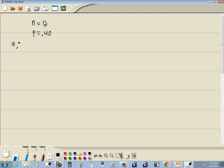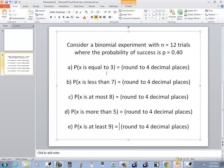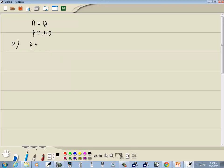Part a says: probability x equals 3. I always like to list out the x values that we're working with. Whenever you're looking for the exact probability, that's binomPDF. The format of the parameters is in alphabetical order: n, p, x. So put n in first, then our p, then our x.